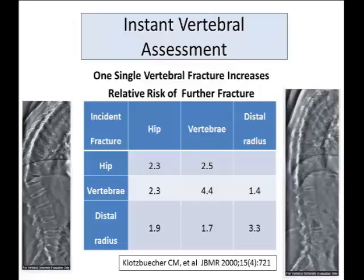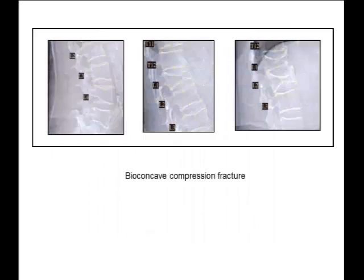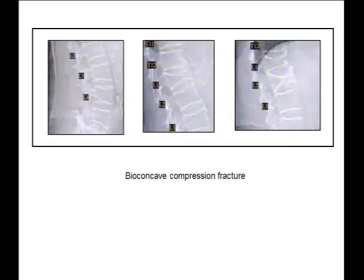These images show clearly a wedge vertebral fracture and a biconcave fracture. In the most right-hand image, the biconcave fracture is clearly severe — over 40% reduction in the height of that vertebra at the biconcave format. The morphology is biconcave and the severity is graded as severe by the extent of height reduction.